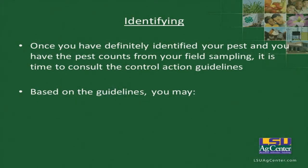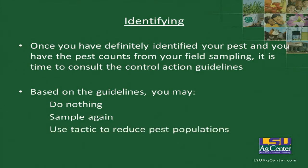Once you've definitively identified your pest and have pest counts from sampling, it's time to consult the control action guidelines. Based on these guidelines you may do nothing — you've sampled the field, found no insects or only a few not at threshold, so you don't do anything. You may have to sample again, or if necessary, use a tactic to reduce pest populations.